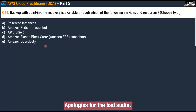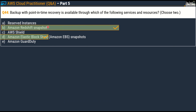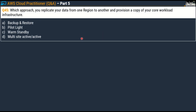Question number 44: backup with point-in-time recovery is available through which of the following services and resources? Please note you have to pick two correct answers. Options: A) Reserved Instances, B) Amazon Redshift Snapshot, C) AWS Shield, D) Amazon Elastic Block Storage — also known as Amazon EBS Snapshots, and E) Amazon GuardDuty. The two correct answers are Option B, Amazon Redshift Snapshot, and Option D, Amazon Elastic Block Store Snapshots.